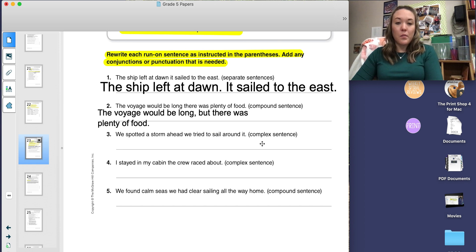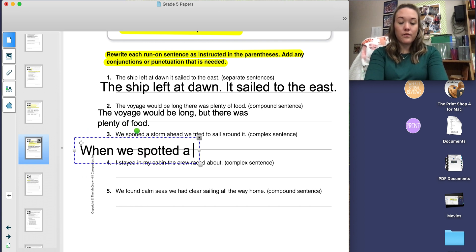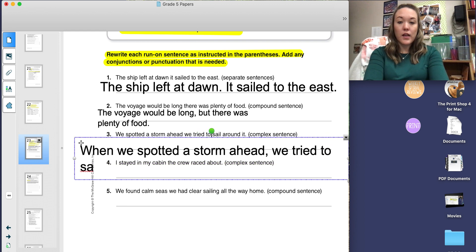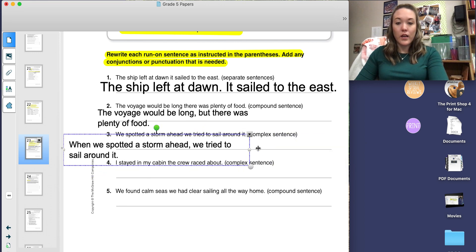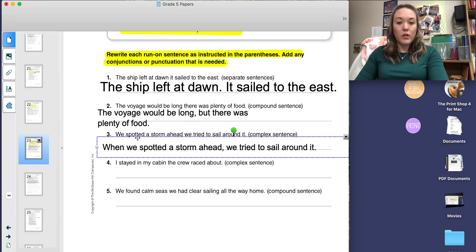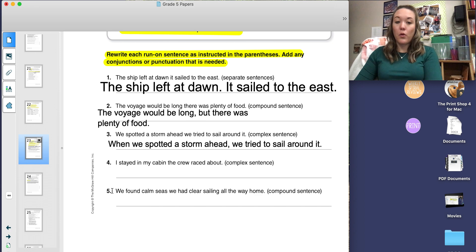And number three, we spotted a storm ahead, we tried to sail around it. This one is asking to make it a complex sentence. Therefore, I'm going to add a word when in front. That makes that a dependent clause, comma, we tried to sail around it. So now I have a complex sentence with a dependent clause first and then the independent clause. You will need to finish this with only doing four and five.